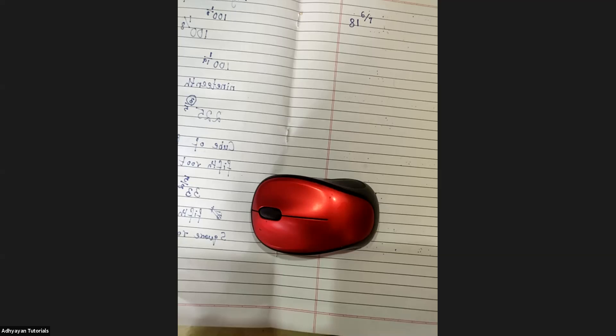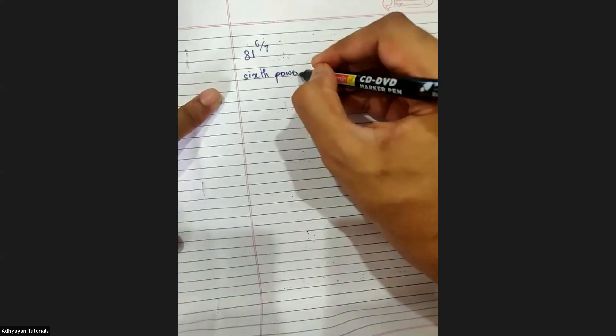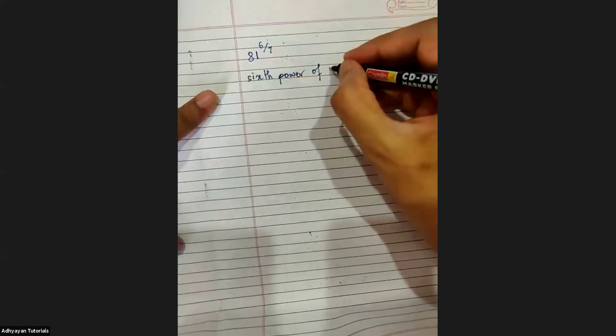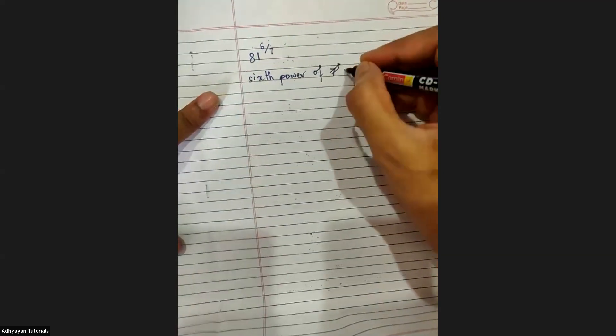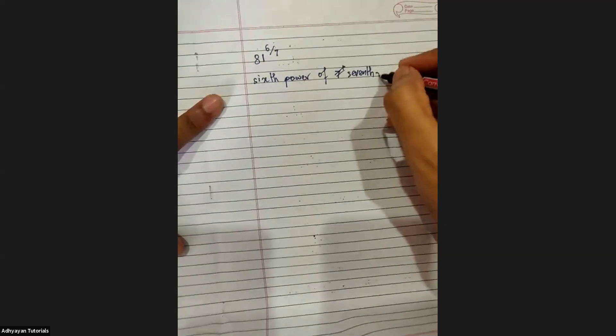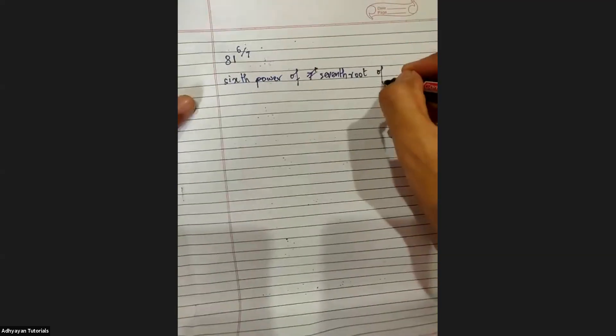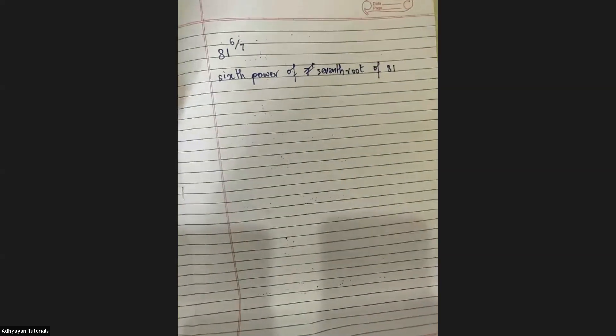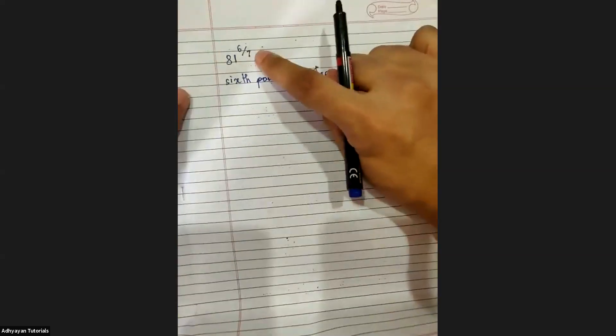Shreya Raichan was the first to answer correctly. Sixth power of seventh root of 81 is correct. So I wrote sixth power of, then seventh root of 81. Now tell me order first and then power — come on quickly.